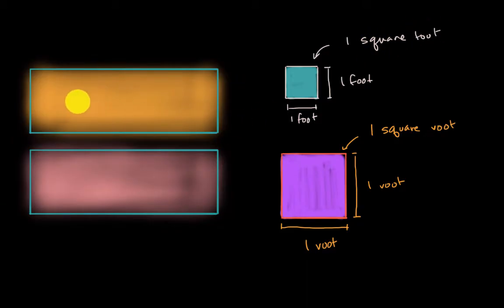Now let's measure the top rectangle in terms of square feet and the bottom rectangle in terms of square veet. So first, the top rectangle. We have one, two square feet, three square feet, four square feet, five square feet, and then six square feet.